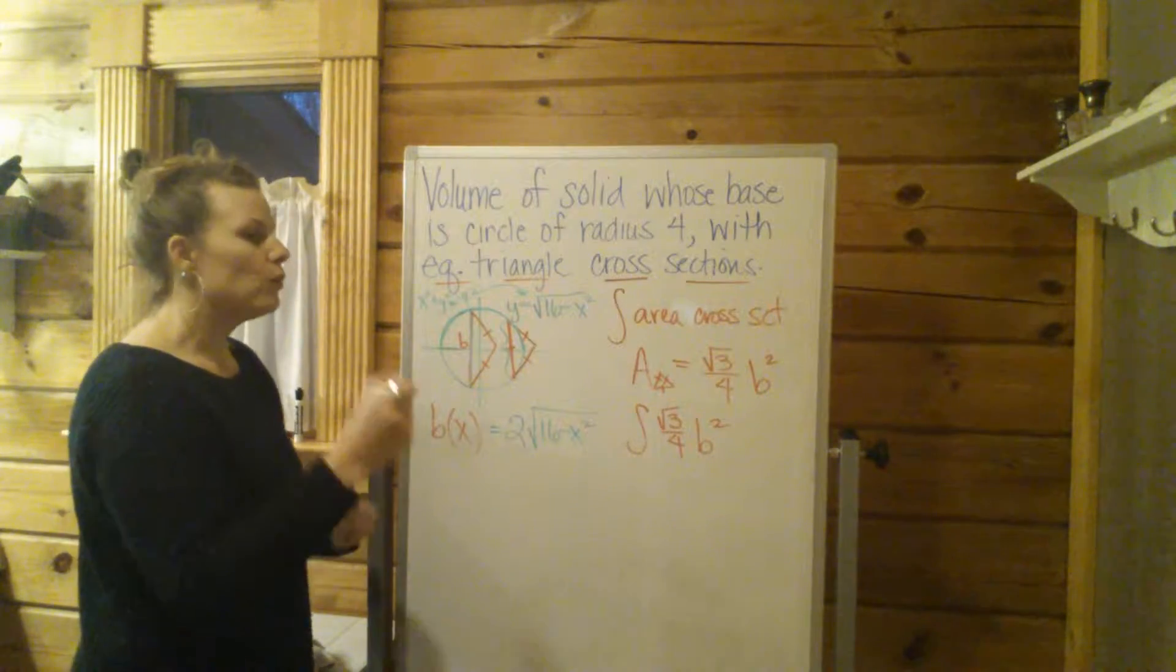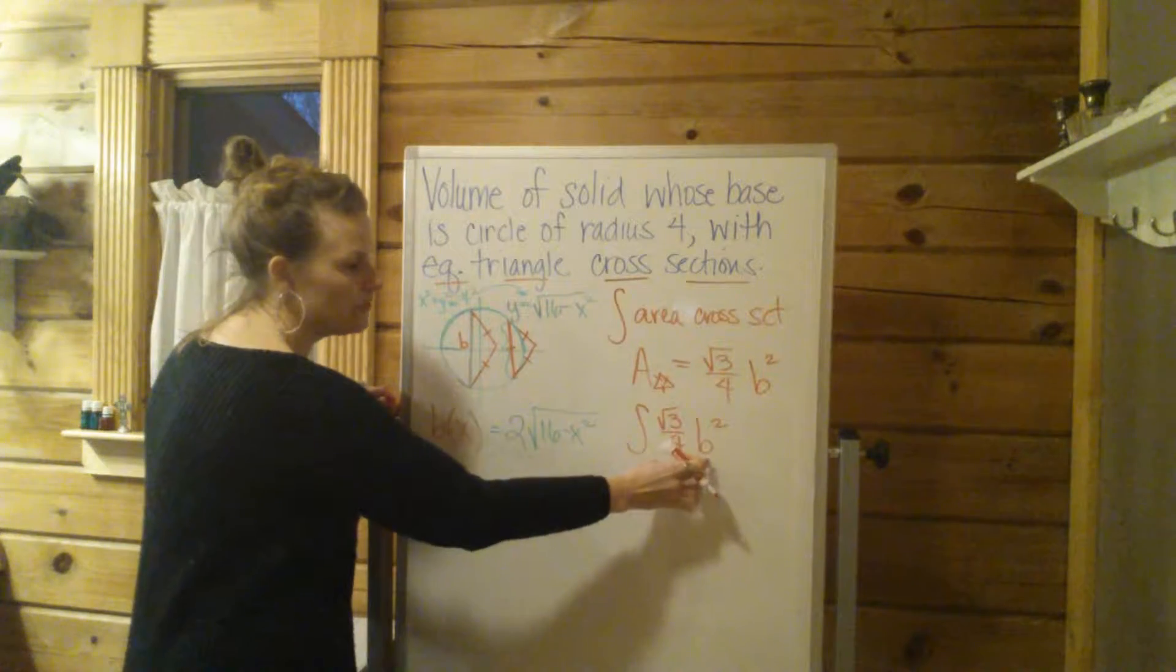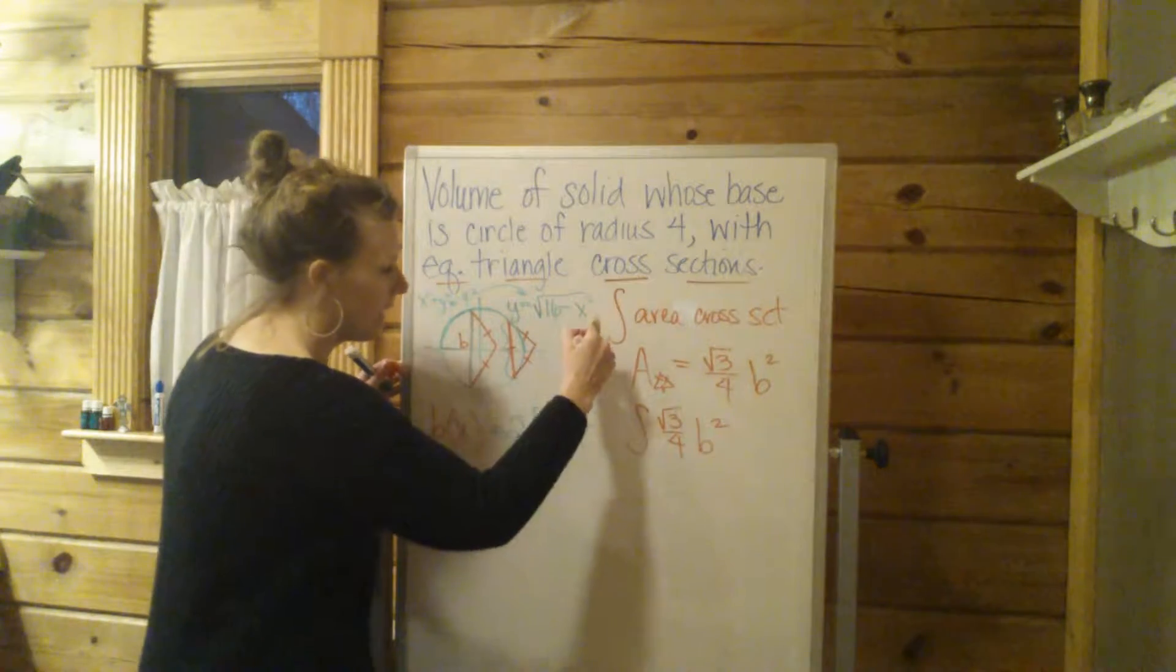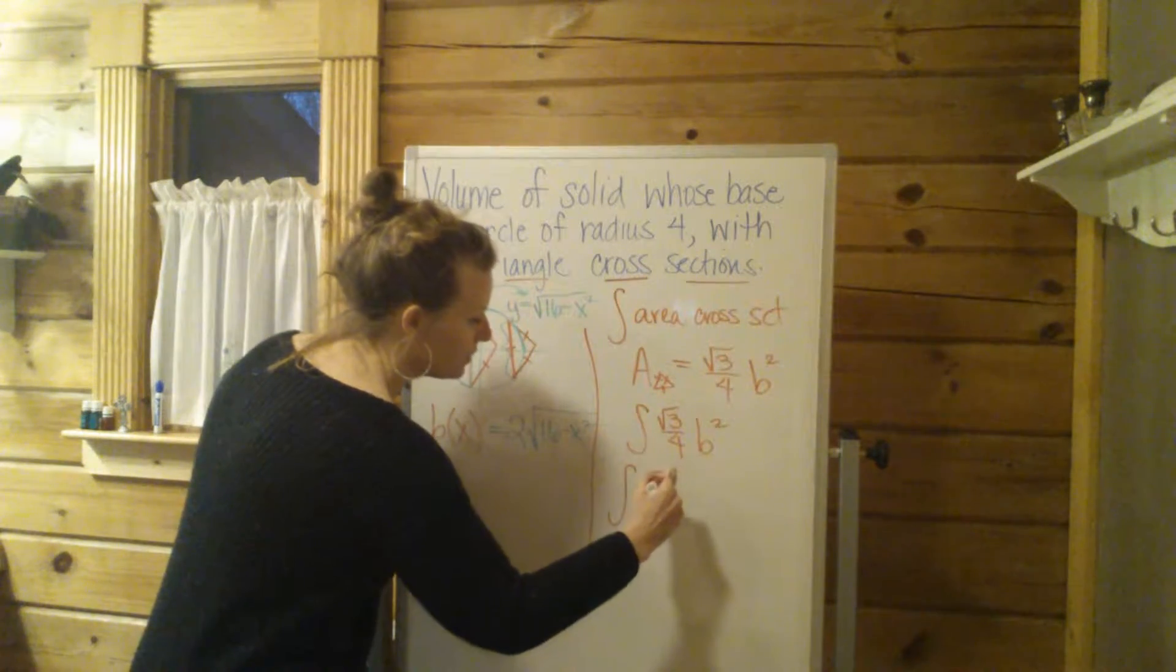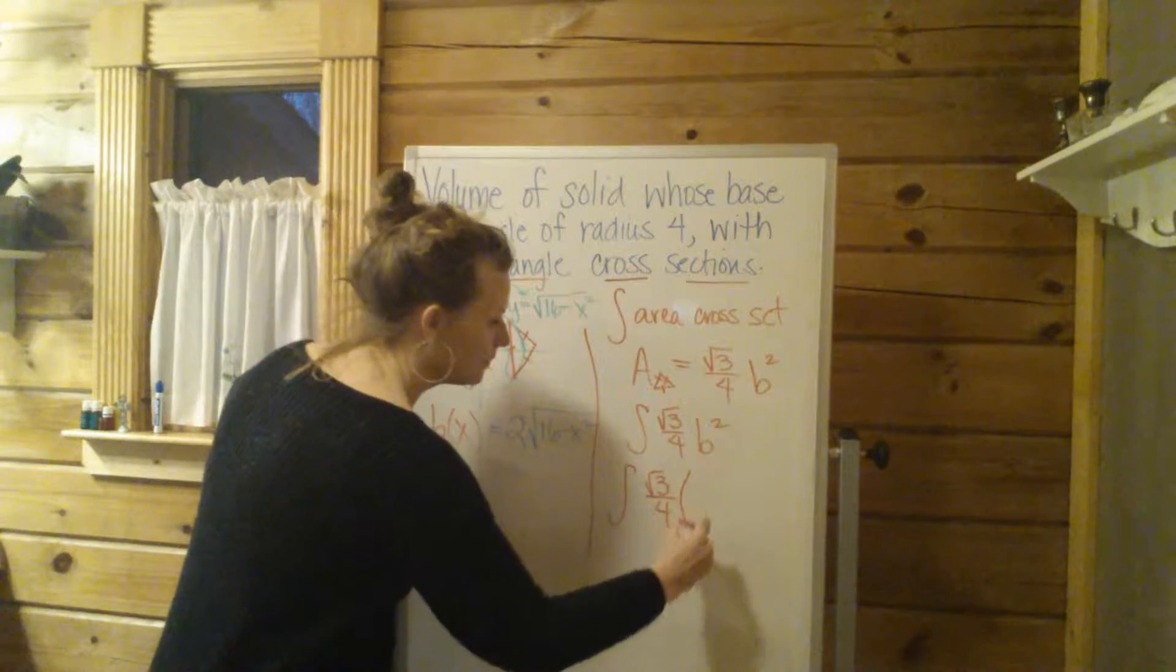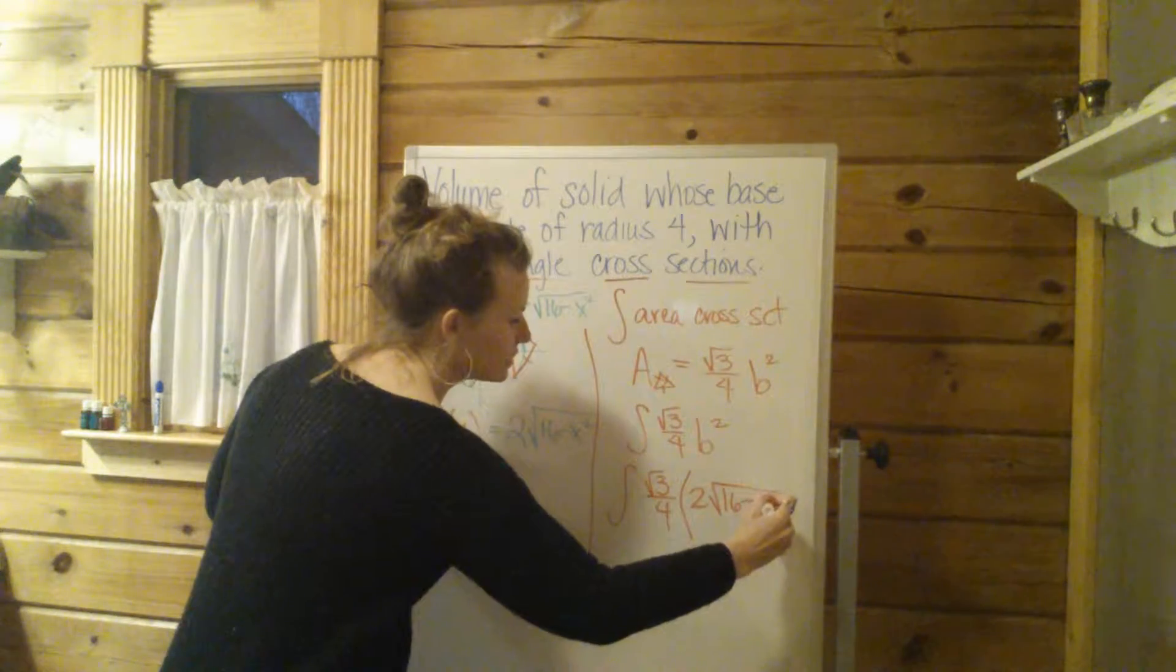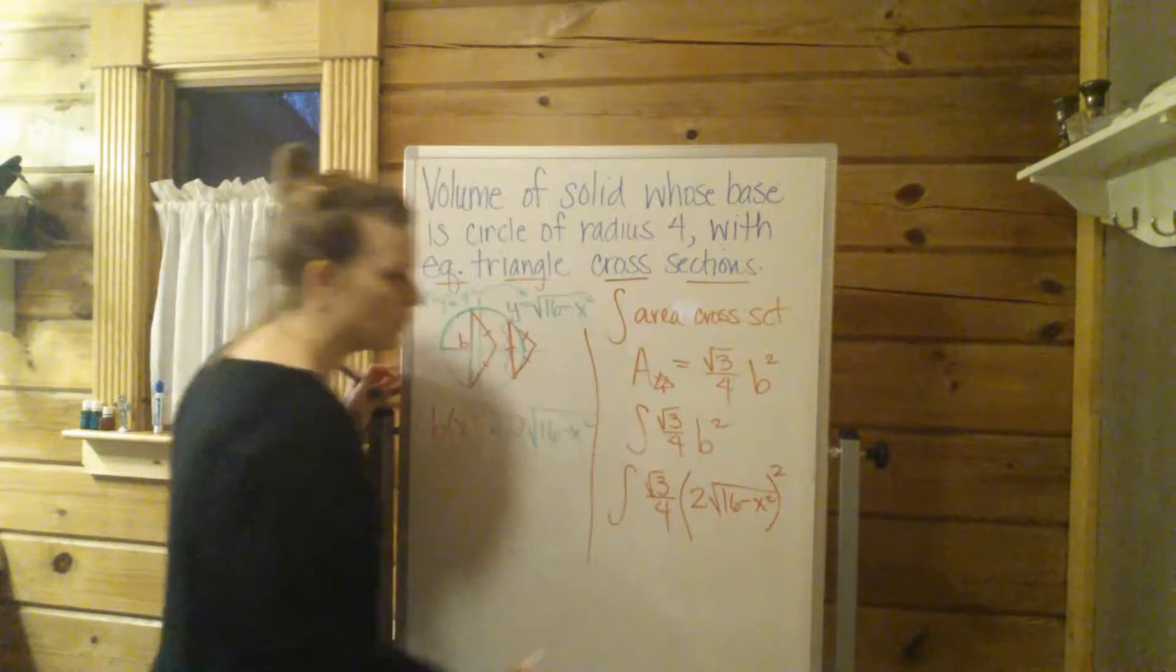Now we've done most of the work. Now we just have to plug this b expression in for this b and then evaluate the integral. So we're going to say, let's divide this up. We're going to have the integral of the square root of 3 over 4. Now b is 2 radical 16 minus x squared. Now that whole thing is squared.